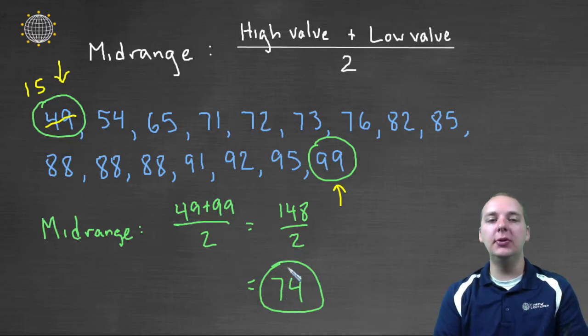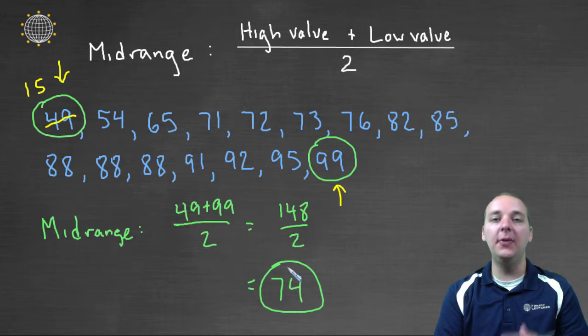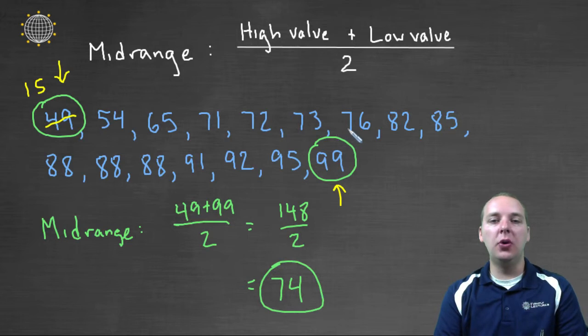And a typical student didn't score in the fifties, right? Clearly here your typical student seemingly scored in the low eighties or high seventies or so.